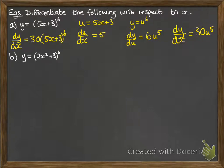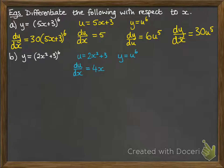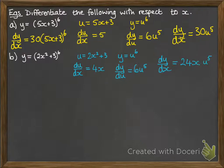We'll do another one. So u is going to be 2x squared plus 3, and y is u to the 6. du by dx is 4x — we're just differentiating the u. Differentiate the y part and we've got 6u to the 5. So dy by dx will be those two multiplied together. Replace the u with what we know it is in x's, and we get our final answer.